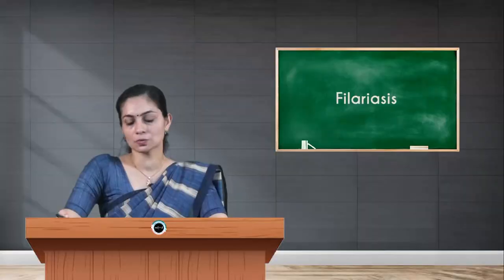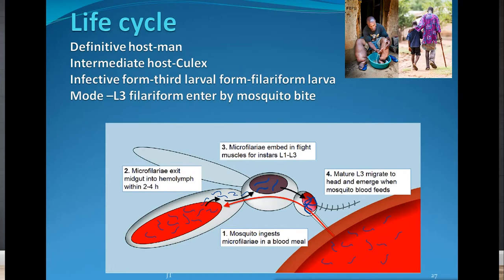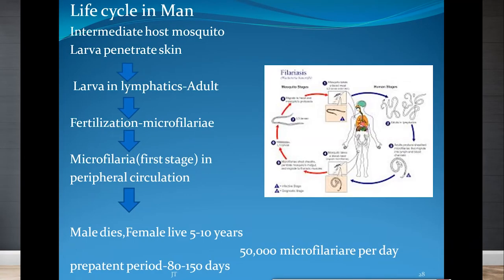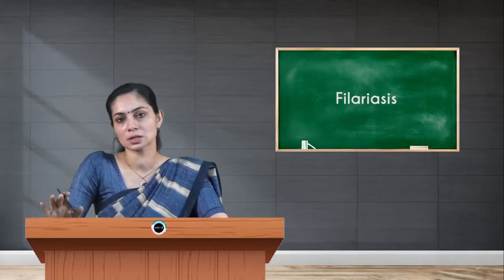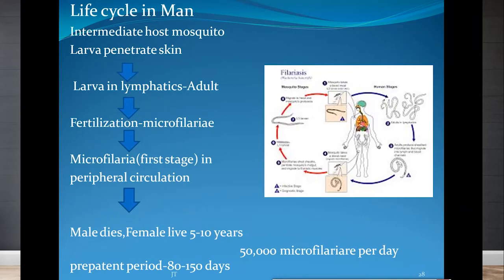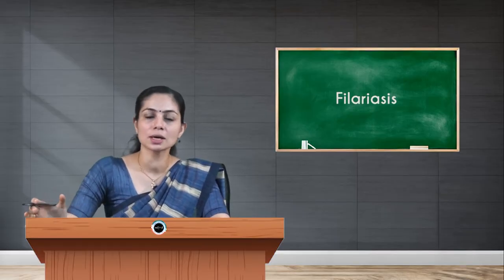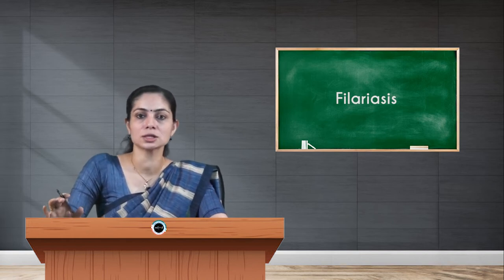The third-stage larva is the infective form for human beings — the filariform larva. In the life cycle, these filariform larvae enter through a mosquito bite into the human body. The filariform larvae penetrate the skin and reach the lymphatics. After moulting, the larval stage becomes the adult parasite. Male and female fertilization occurs, giving rise to microfilaria — the first larval stage. This microfilaria enters into the peripheral circulation, which can be demonstrated in peripheral smear examination — that is the diagnostic stage. The time taken for this entire cycle in humans, from the entry of filariform larvae until the demonstration of microfilaria, takes around 8 to 150 days — this time period is called the pre-patent period.